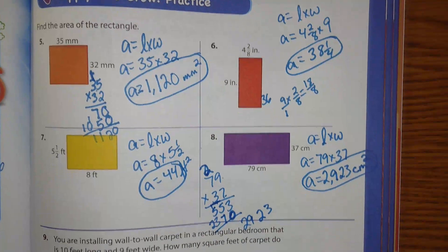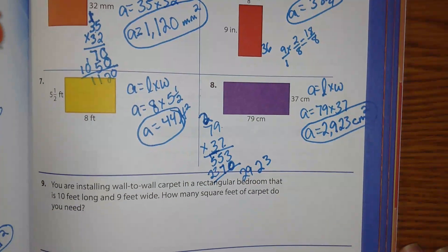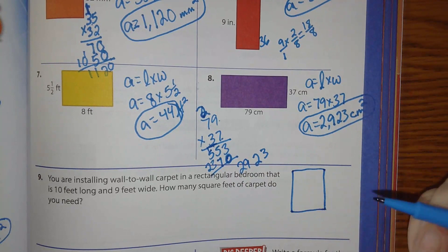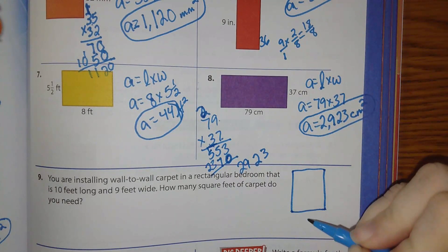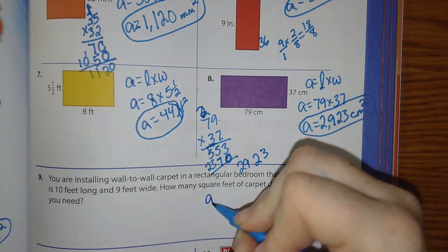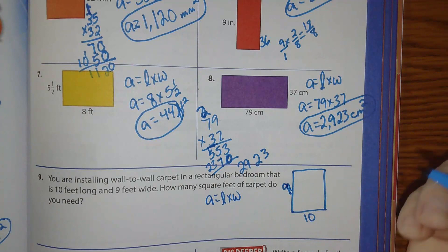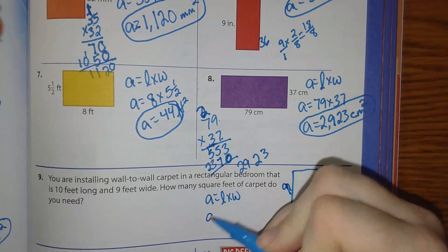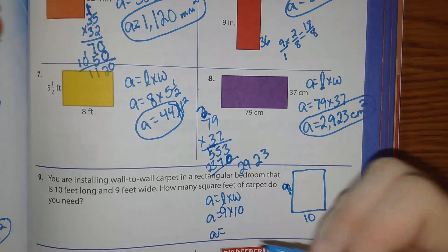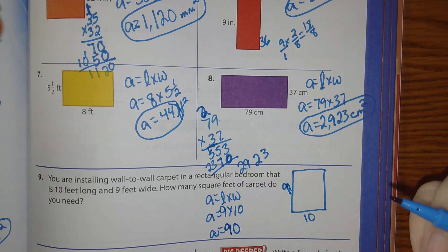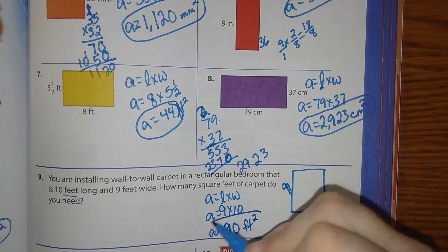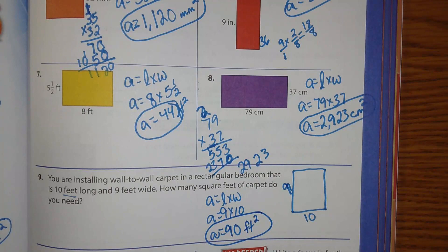We're going to go down just a little bit. Number 9 says you are installing wall-to-wall carpet in a rectangular bedroom that is 10 feet long by 9 feet wide. So I know that A equals L times W. A equals 9 times 10. A equals what? 90. Yep, 90. And we are talking about feet. So 90 feet squared. Good job today, guys.